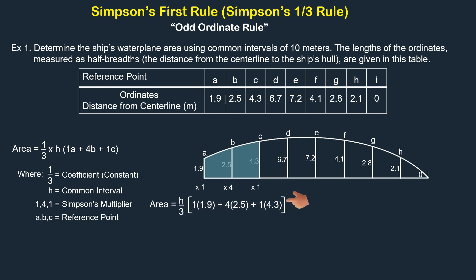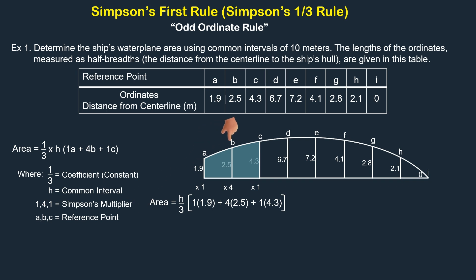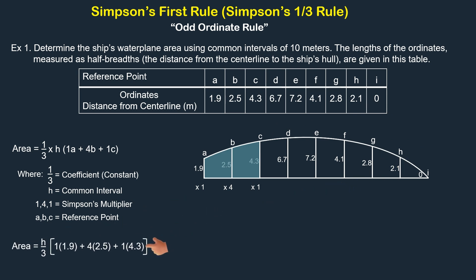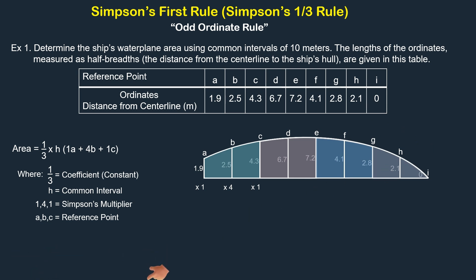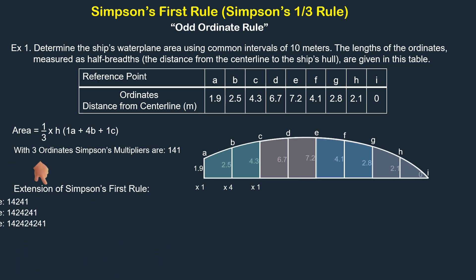So this is the procedure to find the area with 3 ordinates. The value of H in this problem is 10 meters. Since this procedure applies only when there are 3 ordinates, but in this example we have 9 ordinates, the question arises: do we need to repeat the procedure for each section, such as between C and E, E and G, and G and I? The answer is no. Instead, we use the extension of Simpson's First Rule.